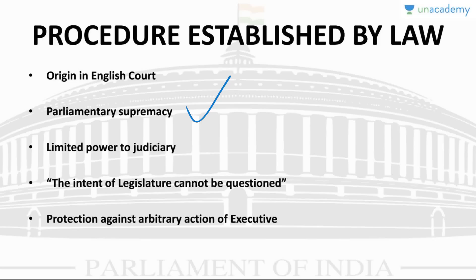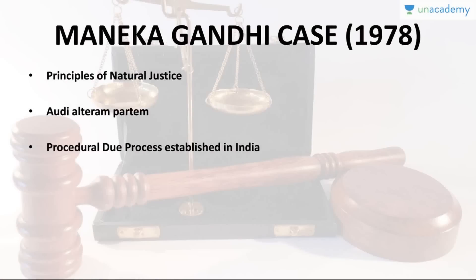Article 21 initially intended to provide only physical protection to the individual against arbitrary action of the executive, and the Supreme Court refused to accept that the article included the doctrine of due process. But in the landmark Maneka Gandhi versus Union of India case of 1978 — the passport case — the Supreme Court overruled its previous stance and held that Article 21 seeks to provide full liberty to the individual and inherently encloses the principles of natural justice. Procedure established by law must be right, just, and fair, and not arbitrary, fanciful, or oppressive.